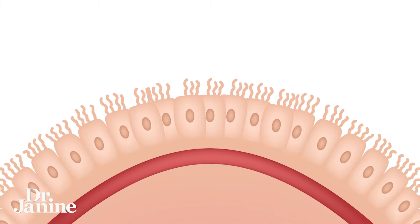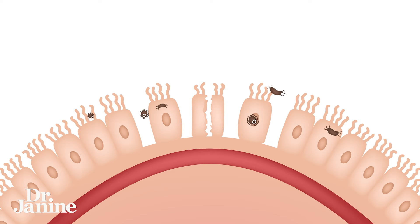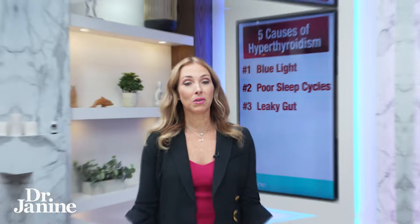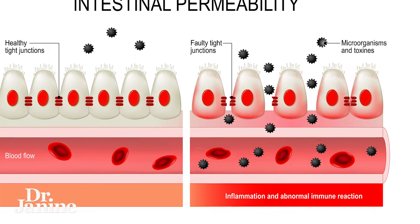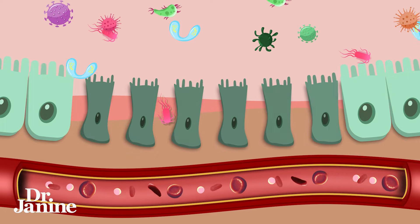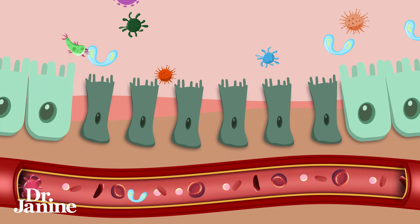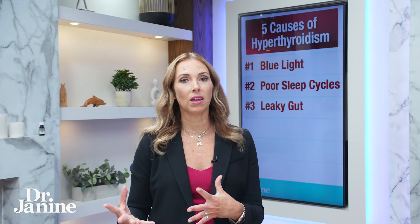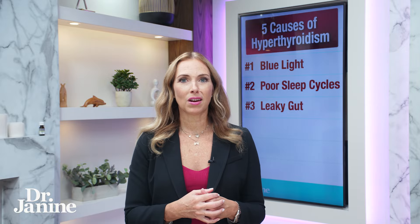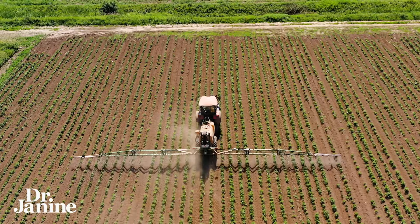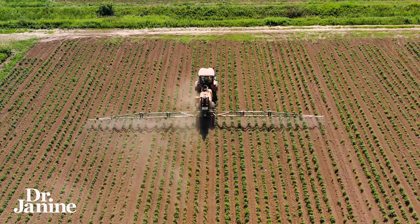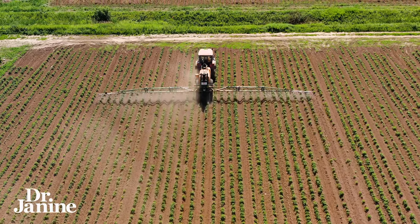Number three on my list is leaky gut. We know that the autoimmunity cause of Graves' disease, as an example of hyperthyroidism, can often be related back to what's happening in the gut. When the gut becomes leaky, those tight junctions open up and the immune system starts to react to things getting through the gut that really shouldn't be, causing the body to attack itself — attacking the thyroid gland. One of the culprits that can cause leaky gut is glyphosate, a herbicide widely used in modern agriculture. Certain foods are high in glyphosate, so it's important to learn more about that.